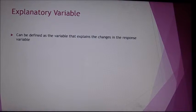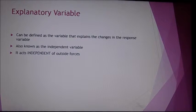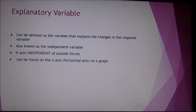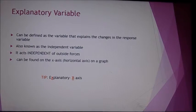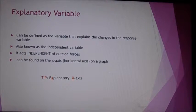It is commonly known as the independent variable because it acts independent of outside forces. It can be found on the x-axis or horizontal axis of a graph. A tip for remembering explanatory variables on the x-axis is that explanatory is spelled with an x.